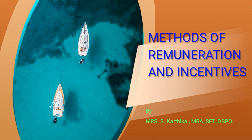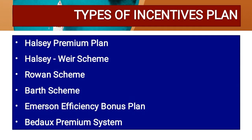Welcome to BB Executives channel. I am your Kartika. In the previous video we saw the methods of remunerations and its types. In this video we are going to see the methods of incentives. Total incentive plans are six to seven types: first, Halsey Premium Plan; second, Halsey Weir Scheme; Rowan Scheme; Bath Scheme; Emerson Efficiency Bonus Plan; and Budox Premium Scheme.